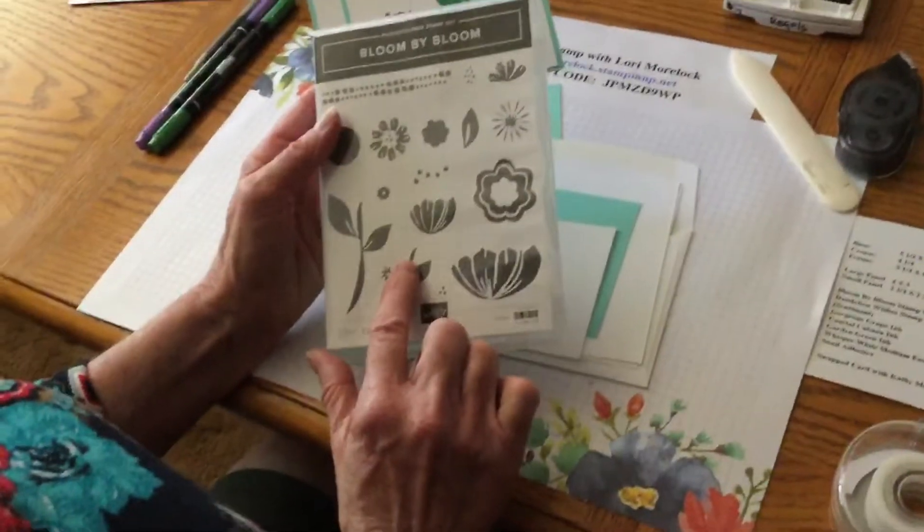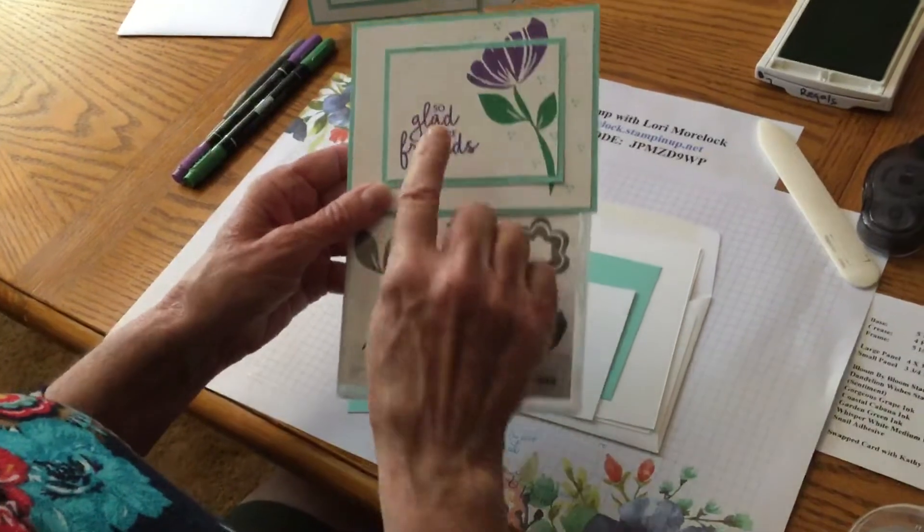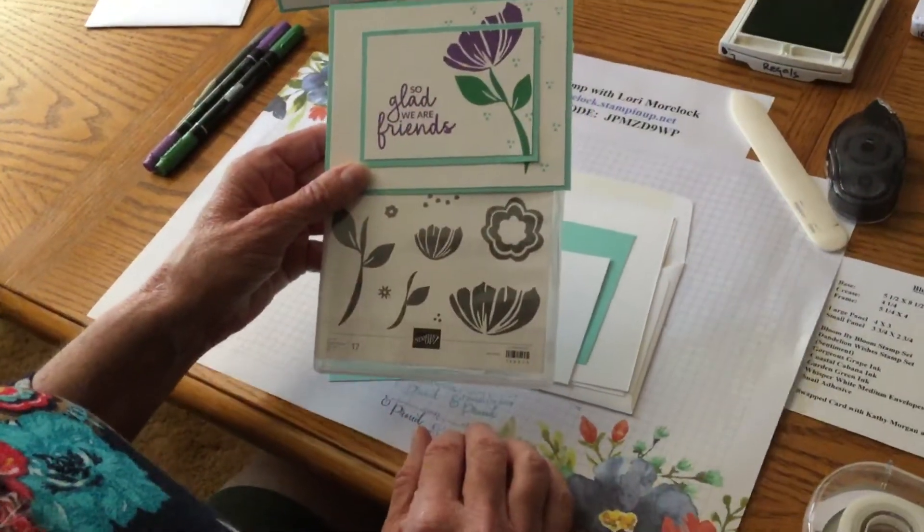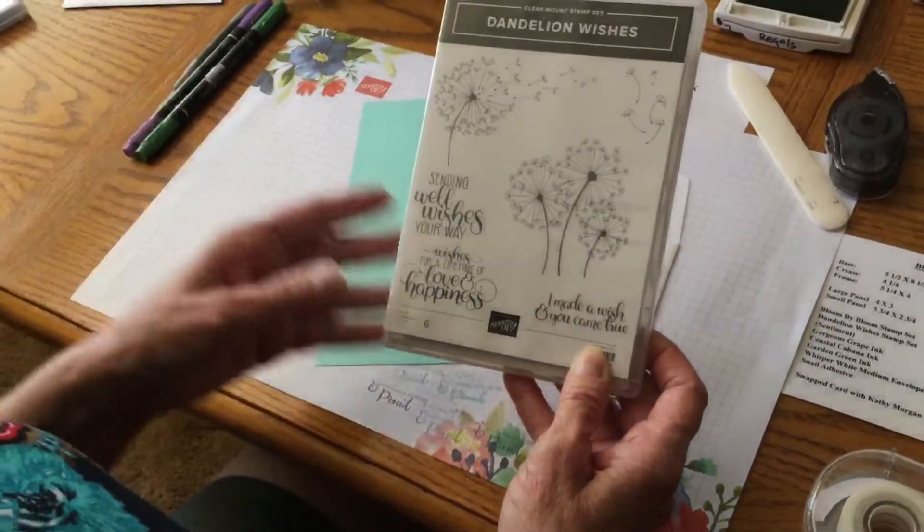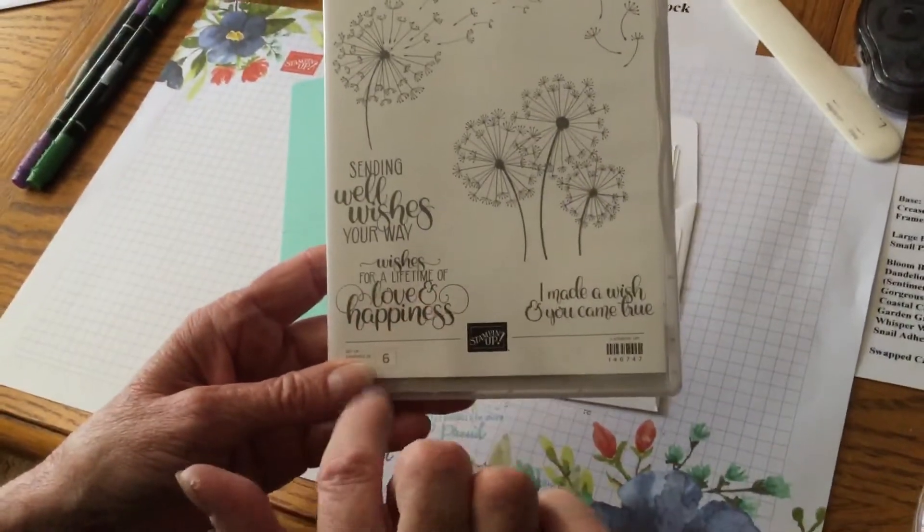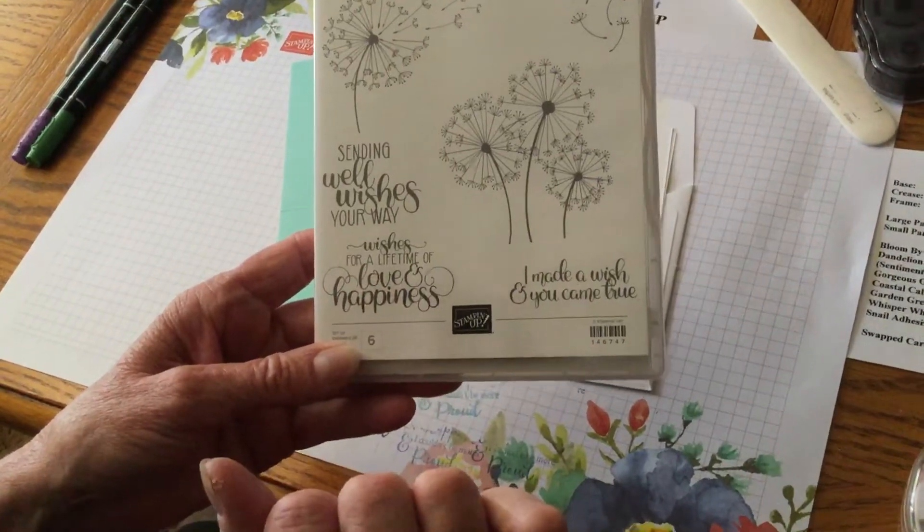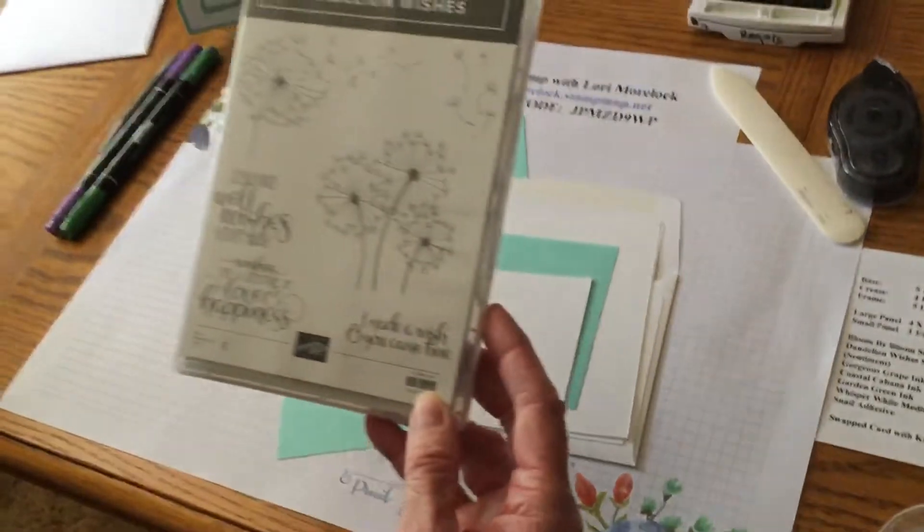So we did use our Bloom by Bloom stamp set. Now this is retiring, so you will want to order this soon. I didn't have the sentiment that she used for her card, so I took my Dandelion Wishes and I used the wishing for a lifetime of love and happiness to go on my card. But thanks Kathy for this beautiful swap, my girls loved it.